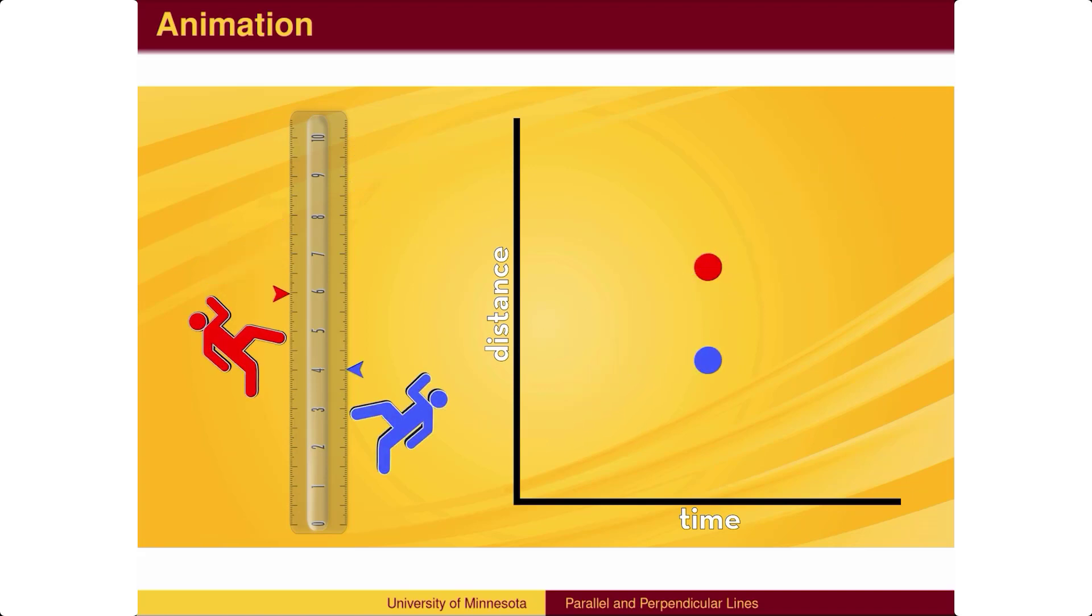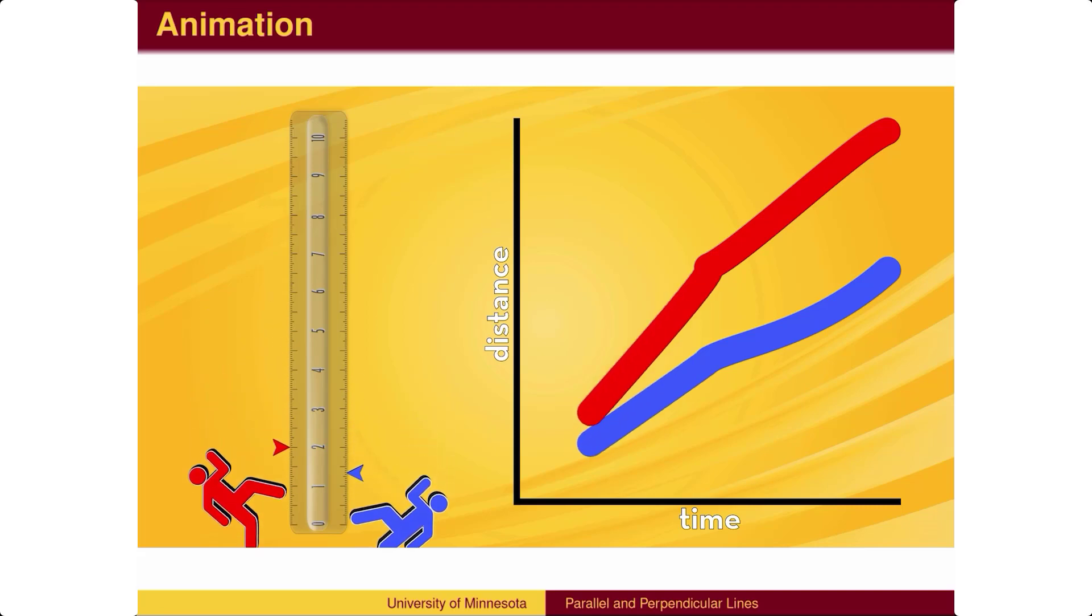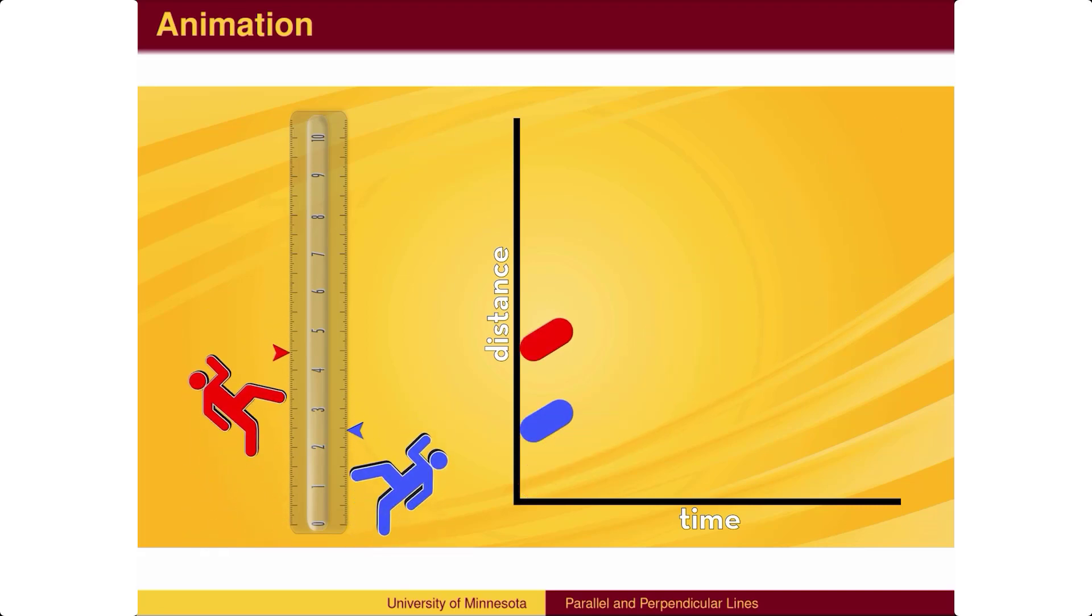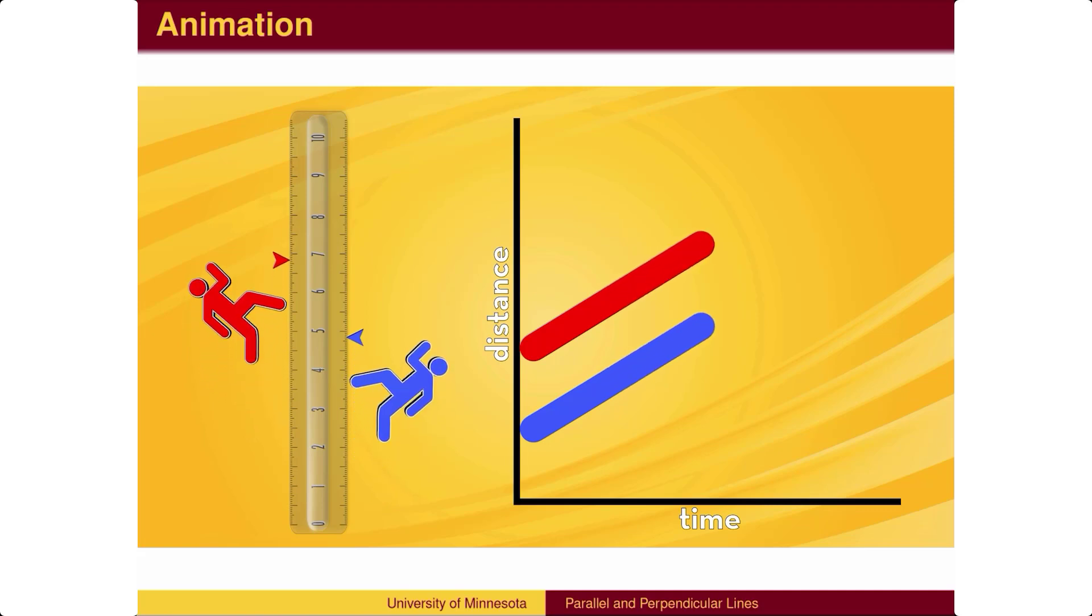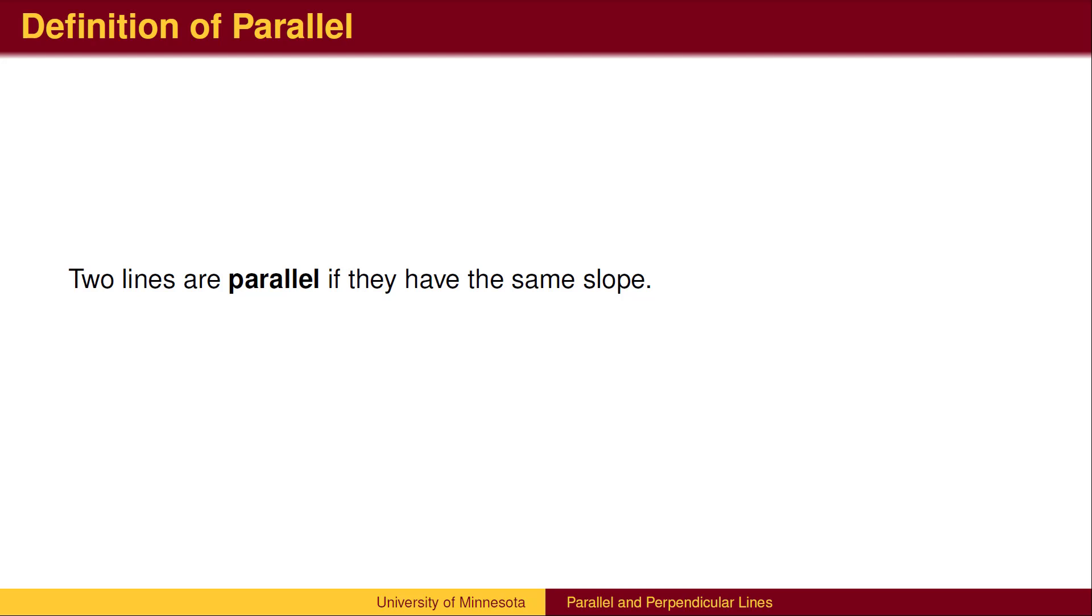Similarly, if the speed of the blue competitor is slower than the red competitor, then at some point in the past the two were at the same location and red moved ahead. The only way the two competitors will never meet is if they run at the same speed. In other words, the lines have to have the same slope. This leads to one definition of parallel lines. Two lines are parallel if they have the same slope.